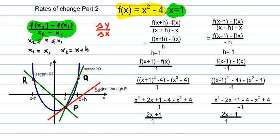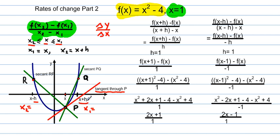For instantaneous rate of change, we find the slope of the tangent through a fixed point — in this case point P on our diagram. x2 is less than x, which is less than x1. On the graph, when you fix the location of point x, x2 is to the left and is defined as x minus h, where h represents a small increment either subtracted or added to x. So x1 is represented by x plus h.